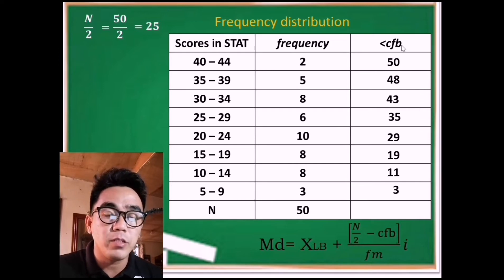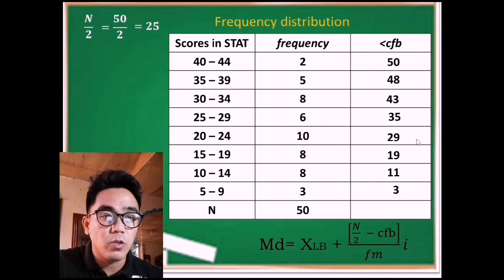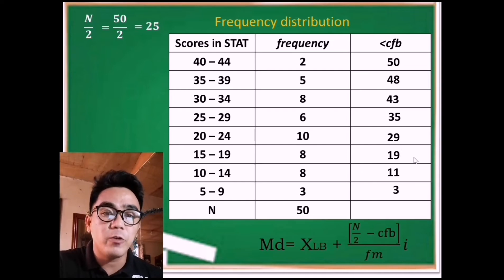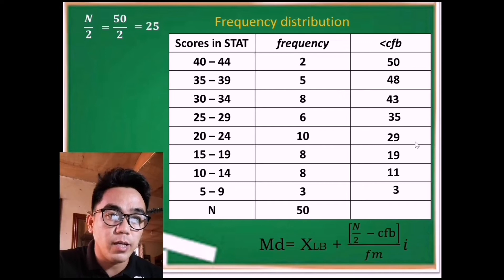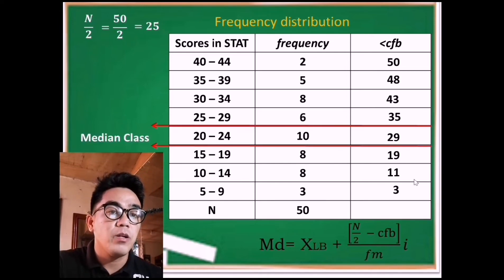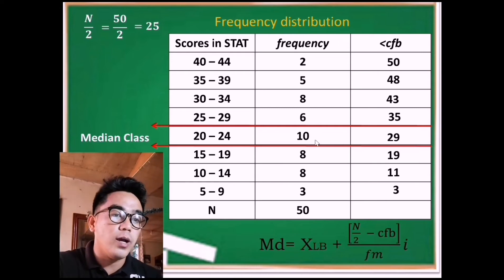In the cumulative frequency before the median class, there is no 25, so we find the value closest to 25. If we use 19, it is 6 steps away from 25. But 29 is only 4 steps away from 25. Therefore, we use 29 as the cumulative frequency value that identifies our median class row.